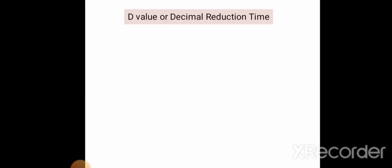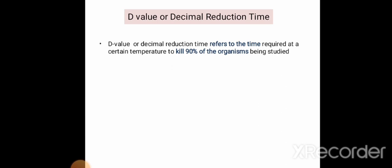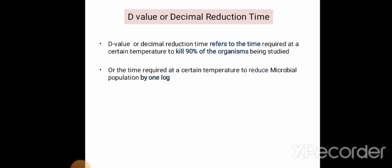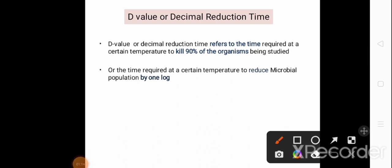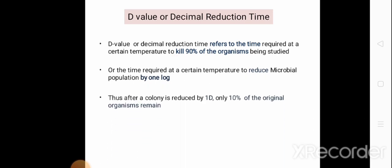First of all, we will discuss about the D value or decimal reduction time. D value or decimal reduction time refers to the time required at a certain temperature to kill 90% of the organism being studied, or it is the time required at a certain temperature to reduce the microbial population by one log. Thus, after a colony is reduced by one D, only 10% of the original organisms remain.